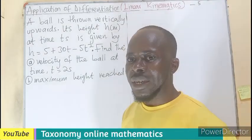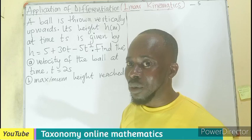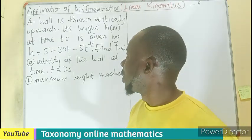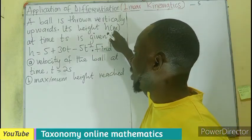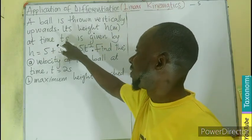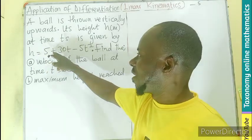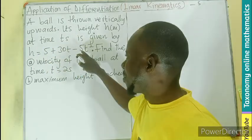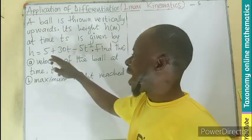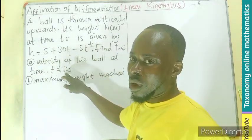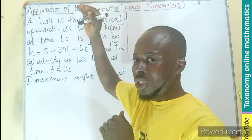Welcome. Let's look at this question under linear kinematics calculus. A ball is thrown vertically upward. Its height h in meters at t seconds is given by h equals 5 plus 30t minus 5t squared. We have to find the velocity of the ball at time t equals 2 seconds, and find the maximum height the ball has reached.